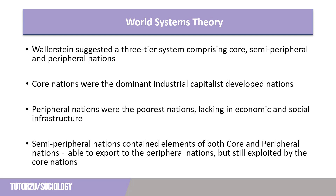Wallerstein's three-tier system comprised core nations — the Western powerhouses: the UK, USA, Canada, and France — and some Asian nations such as Japan and South Korea. It also comprised semi-peripheral nations, what would be seen as newly industrialised countries such as Brazil and India. The final tier was peripheral nations, those with the least economic growth, such as nations in sub-Saharan Africa.